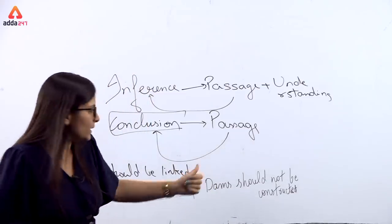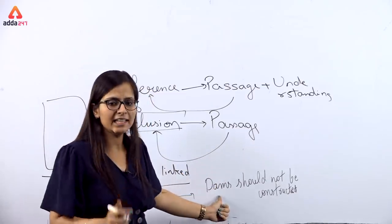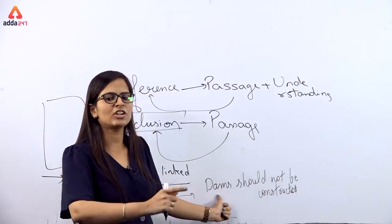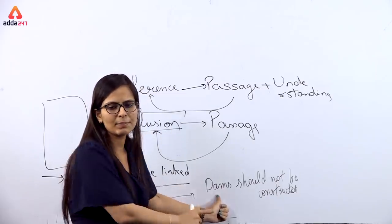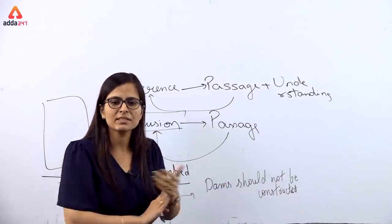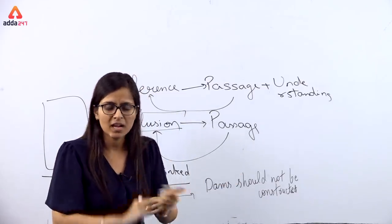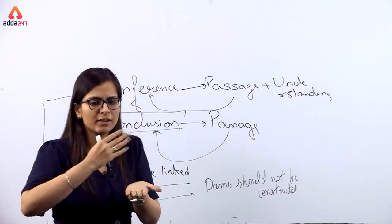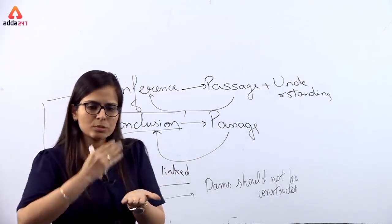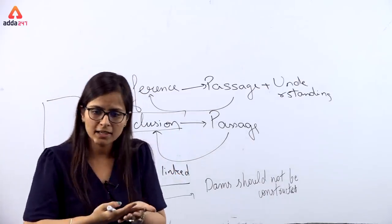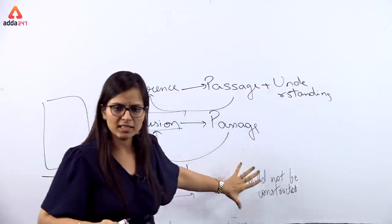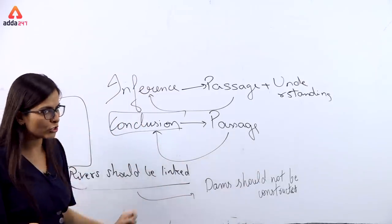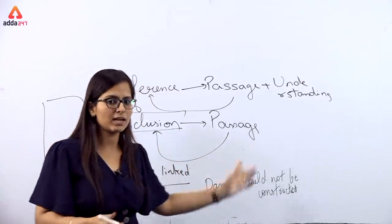So the inference depended on my own understanding — that linking rivers and constructing dams interferes with the course of rivers. Whereas the conclusion depended directly on the passage. There is a significant difference between conclusion and inference.